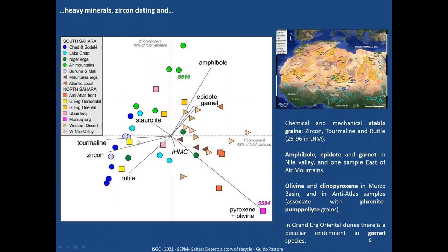Looking at the heavy minerals, we can plot these on a biplot that shows similarities between samples. The rays represent the variability in the components.